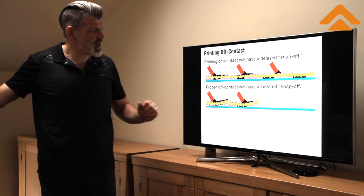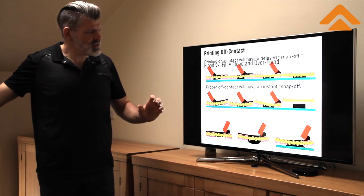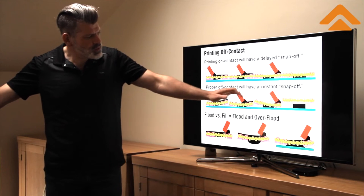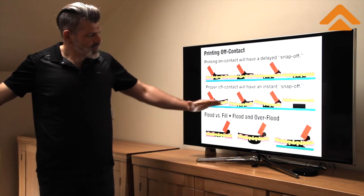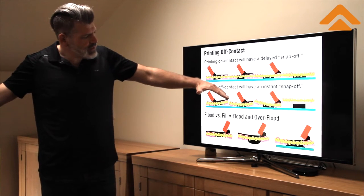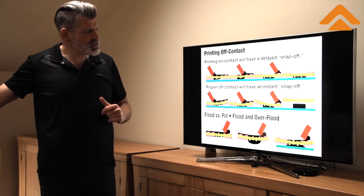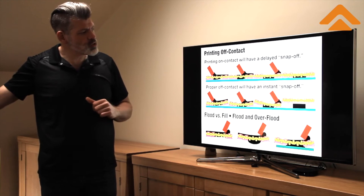Now proper off contact will have instantaneous snap off and what will happen is that as the squeegee travels along, the screen will peel out of the ink as it travels along and it will give you a nice instant snap off and a nice clean sharp print.